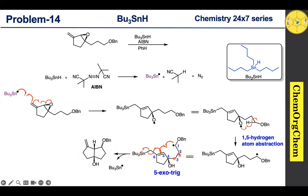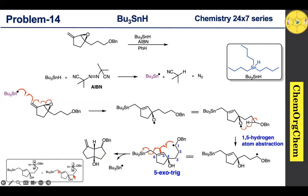This group is present at the bottom face, so the radical attacks the alkene from the bottom face, resulting in the hydrogen atom coming to the top face. The OBn group is shown at a wavy bond, which means this particular compound is present as a mixture of diastereoisomers. The radical can be present at either the bottom or top face with respect to this carbon center, yielding a mixture of diastereoisomers.